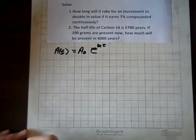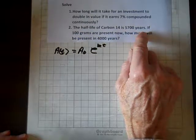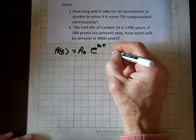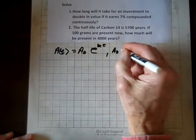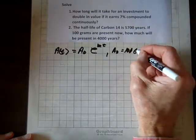And A sub 0 is still the initial amount. And it says the half-life of carbon-14 is 5,700 years. If 100 grams are present now, so A sub 0 equals 100 grams.